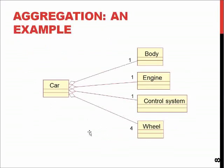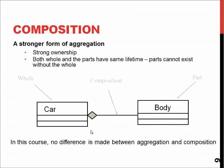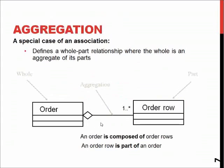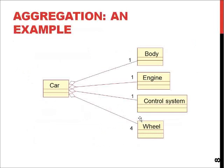Aggregation and composition are basically the same thing: it means that one part here is a part of the other whole object. For example, a car has one body, one engine, one control system, and four wheels — these things form a car.